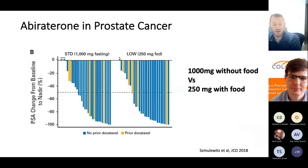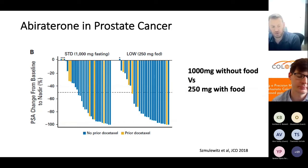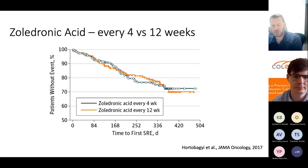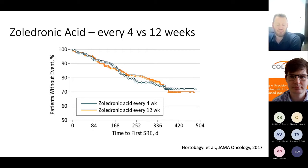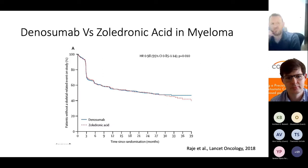The same is true for abiraterone, used in prostate cancer — approved at 1,000 milligrams on an empty stomach, but with food the absorption is much higher, and a study from Chicago showed the same effect at a quarter of the dose. For zoledronic acid, which strengthens bones and prevents fractures, we used to give it every four weeks; however, a study showed exactly the same effect every 12 weeks — saving money, more convenient for patients, and potentially less toxicity.